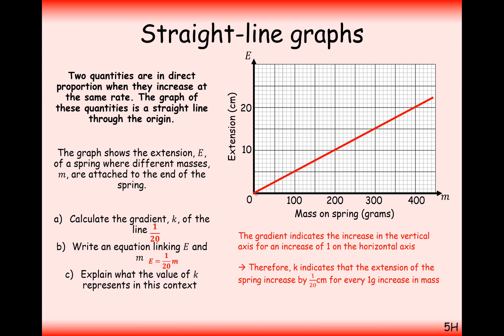The answer here is for every 1 mass, 1 gram mass on the spring, the spring extends by 1/20th of a centimetre on the extension of the spring. So, notice here how my explanation of the gradient was very similar to my explanation of the situation here. I just changed the y-axis with extension of spring and x-axis with mass on the end of the spring.